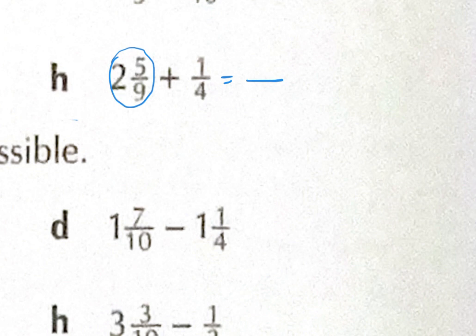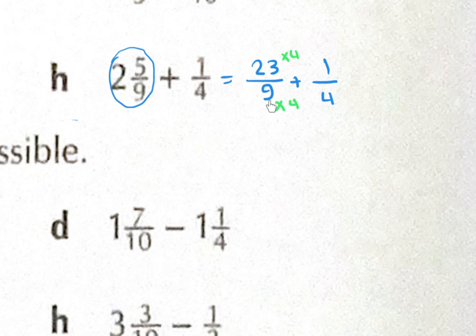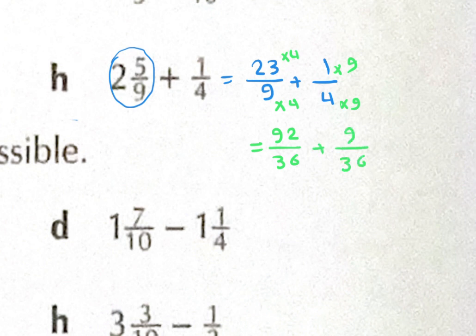For problem H: 2 times 9 is 18, plus 5 is 23, so 23 over 9. Plus 1 over 4. Since we can't convert 4 to 9, multiply 9 by 4 and 4 by 9 to get a common denominator of 36. So 23 times 4 is 92 over 36, plus 1 times 9 is 9 over 36, equals 101 over 36.